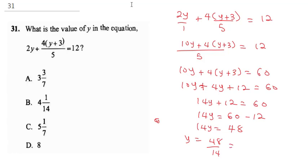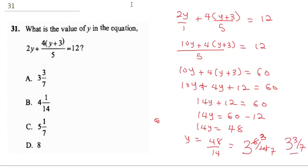How many 14s are in 48? That's 42, giving us 3 whole numbers with 6 remaining, so we have 6 over 14. Dividing both by 2 gives 3 over 7. So y equals 3 and 3/7, and the correct answer is B.